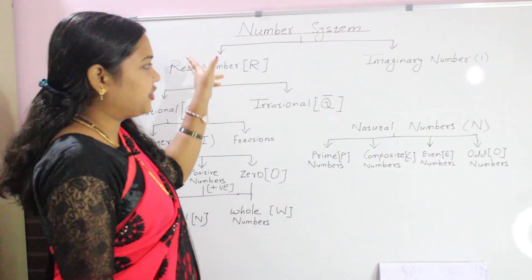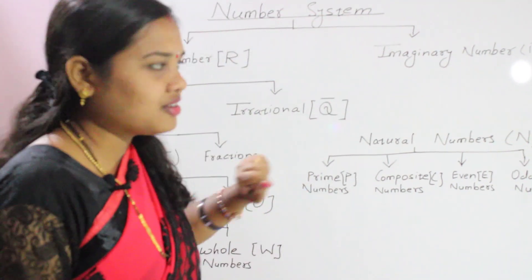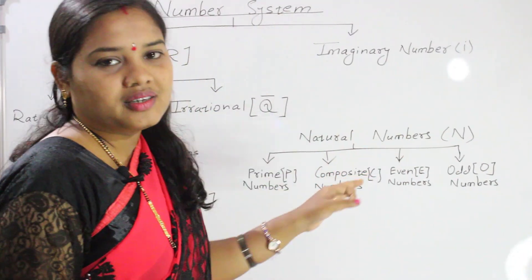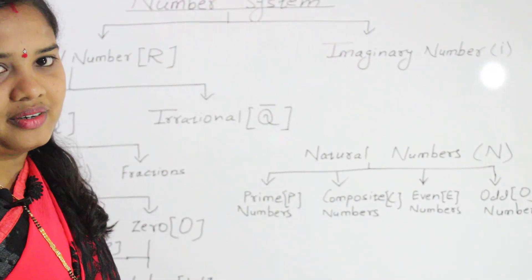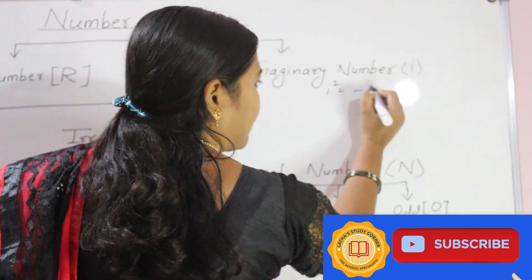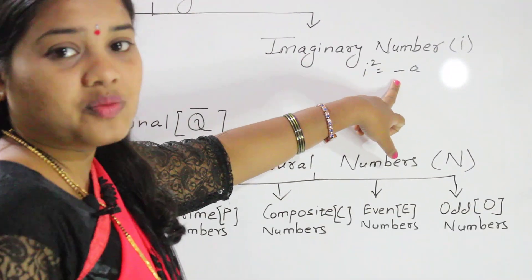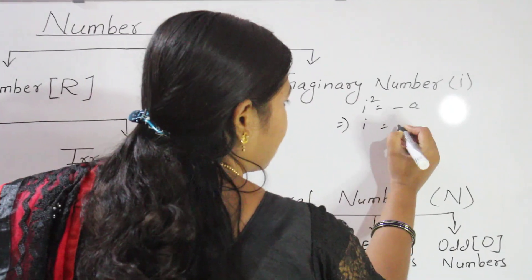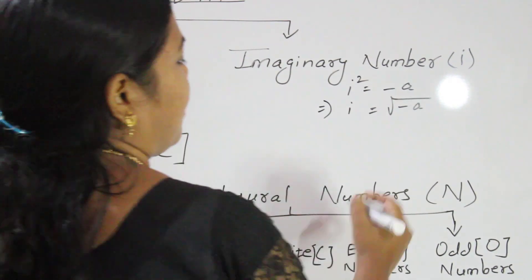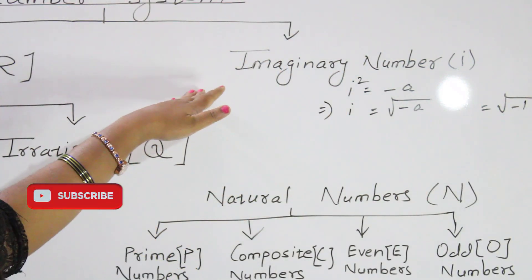Mainly, numbers are divided into two categories: real numbers and imaginary numbers. First we come to imaginary numbers. An imaginary number is a number whose square gives a negative result. i² = -1, so i = √(-1). Here, i is called the imaginary unit.